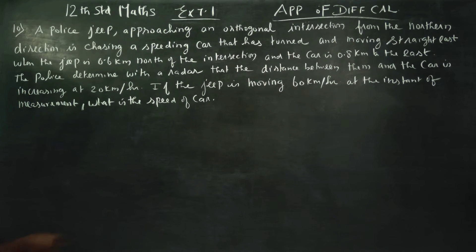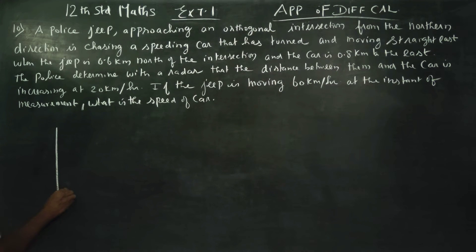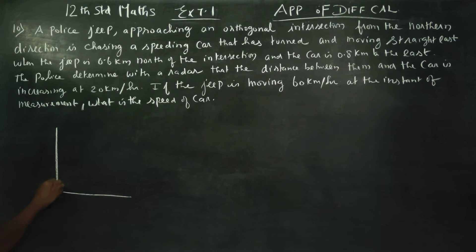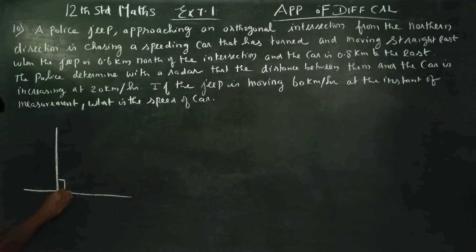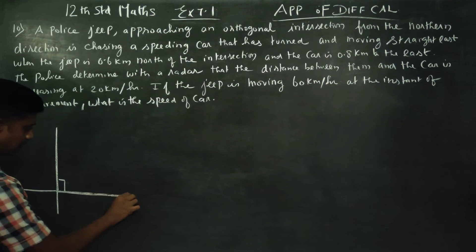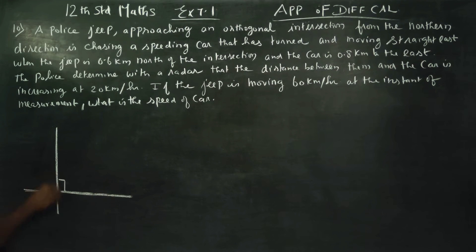An orthogonal intersection is where roads cross at 90 degrees. Here is a road, here is a road — four roads meeting at 90 degrees. That is an orthogonal intersection.